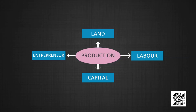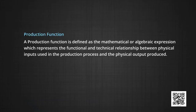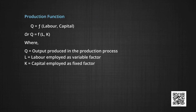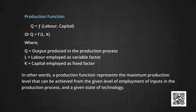Production represents the process through which different factor inputs combine to produce goods and services which are used to satisfy human wants. A production function is defined as the mathematical or algebraic expression which represents the functional and technical relationship between physical inputs used in the production process and the physical output produced. It can be mathematically expressed as Q equals F of L and K, where Q is the output produced, L is the labor employed as a variable factor, and K is the capital employed. A production function represents the maximum production that can be achieved from a given level of employment of inputs and at a given level of technology.